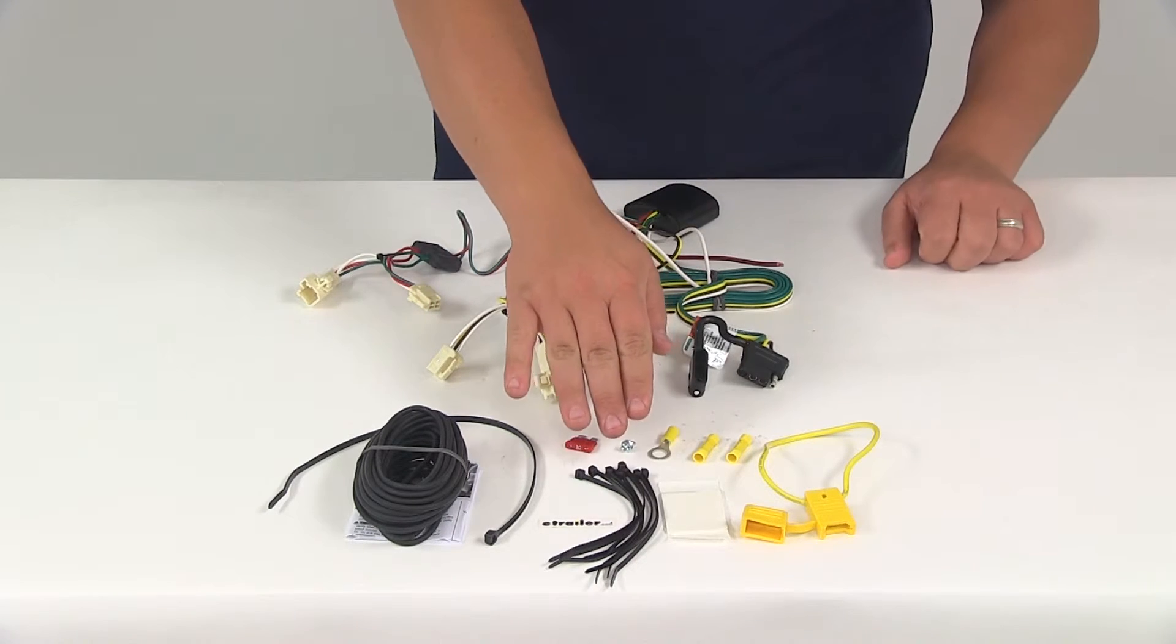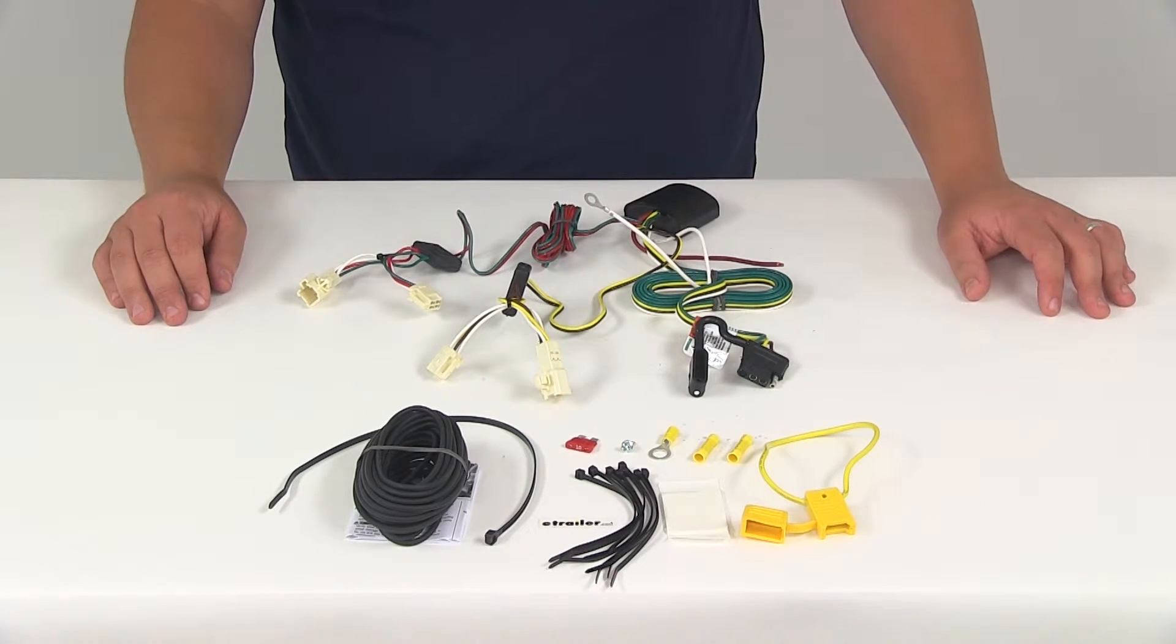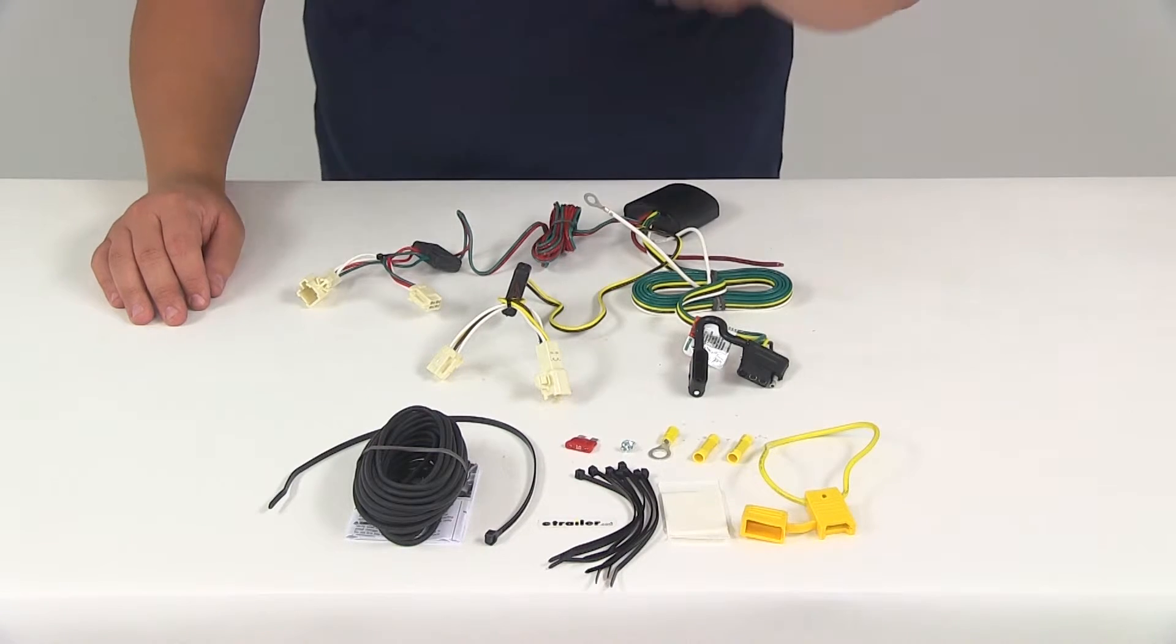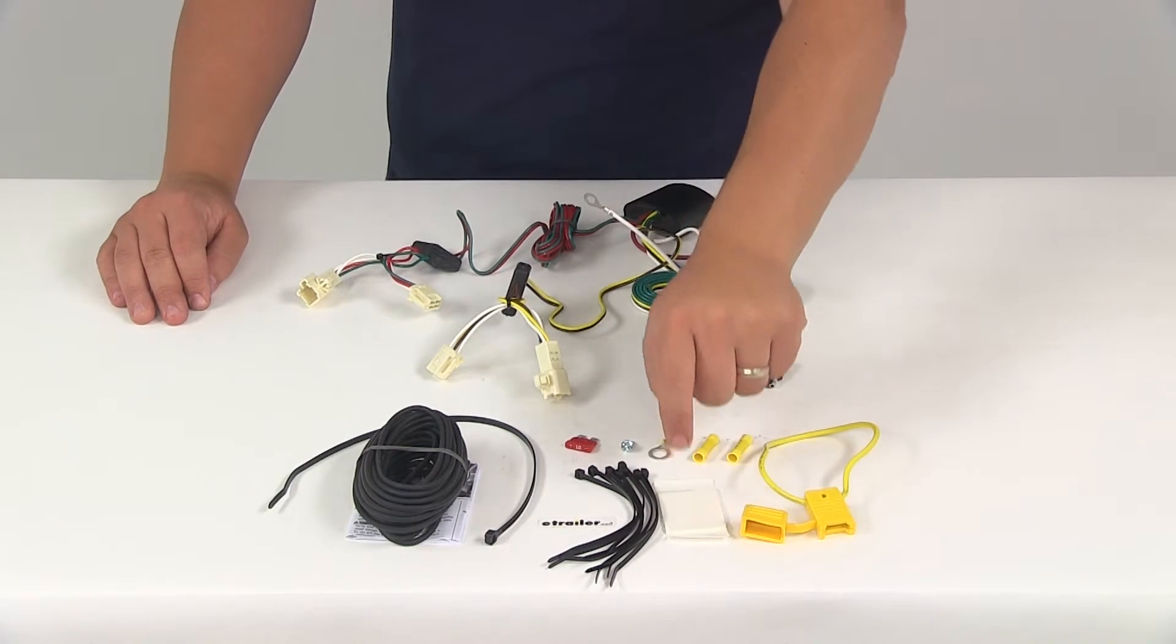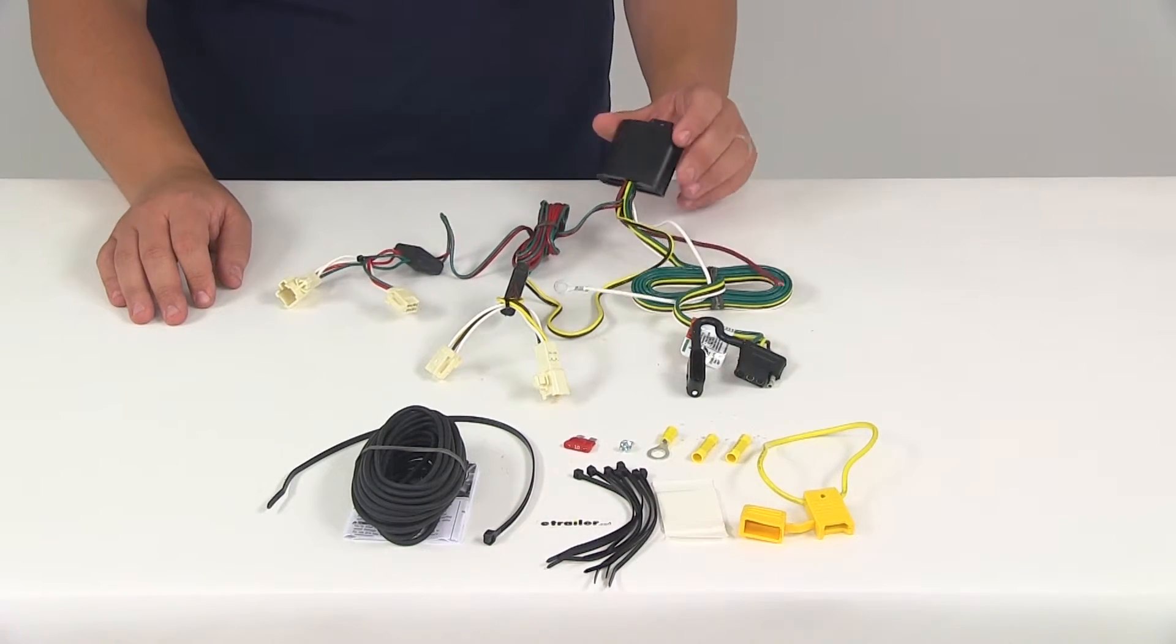They're going to include some cable ties. That way you can secure any excess wires up and out of the way. They're also going to include some double-sided adhesive tape. That way you can mount the Modulite.